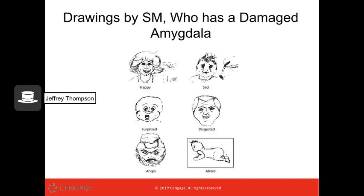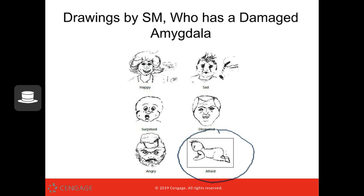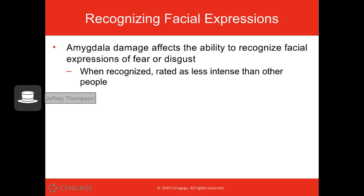We can see the basic emotions — happy, sad, angry, surprised, disgusted, and afraid. You can tell what most of these are, but with afraid, there was no ability to think of what that would look like. The amygdala is core and central in our experience of fear and anxiety. Damage to the amygdala affects our ability to recognize facial expressions of fear and disgust. SM, having amygdala damage, probably had a much harder time representing disgust.